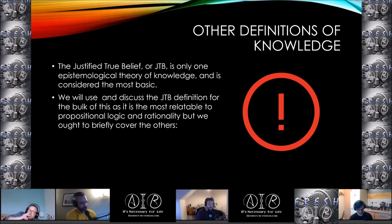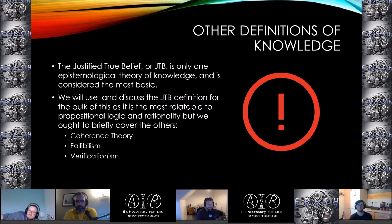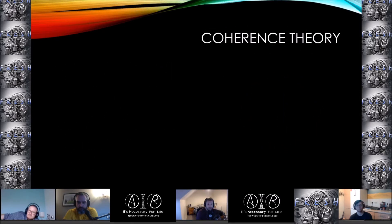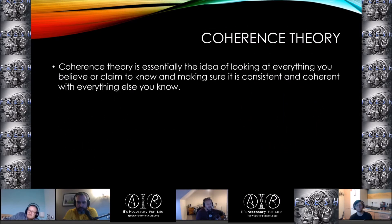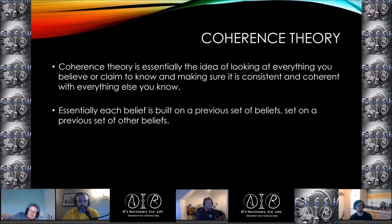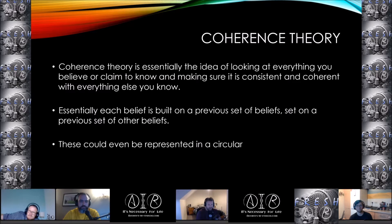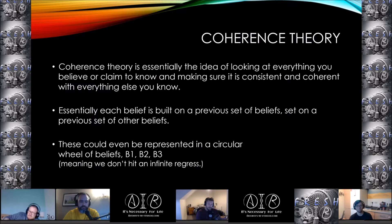But we ought to briefly cover the other theories. Coherence theory is essentially the idea of looking at everything you believe or claim to know and making sure it is consistent and coherent with everything else you know. Each belief is built on a previous set of beliefs, set on previous other sets of beliefs. These could be represented in a circular wheel of beliefs — B1, B2, B3 — meaning that we don't hit an infinite regress.